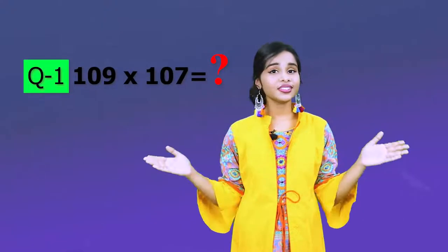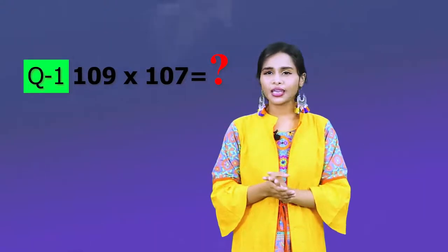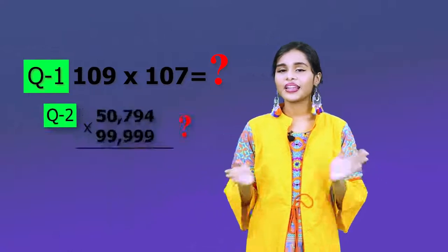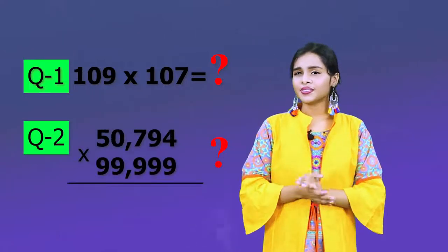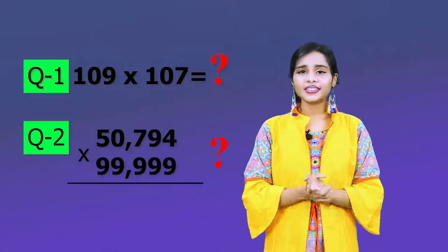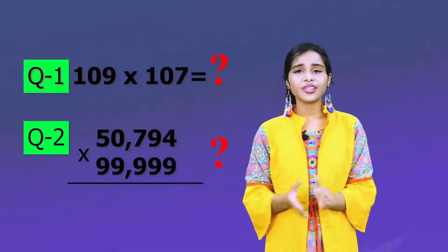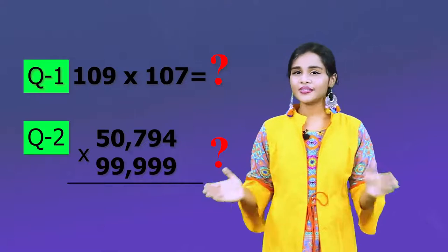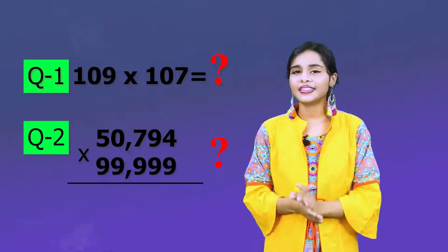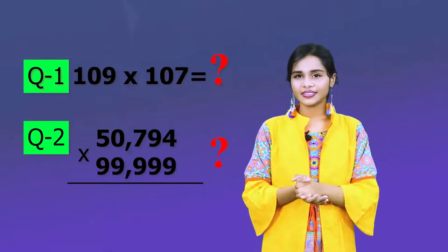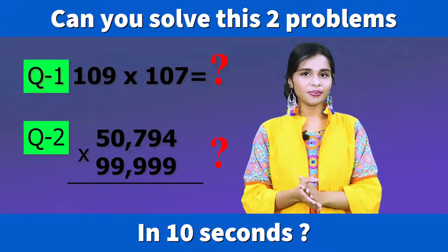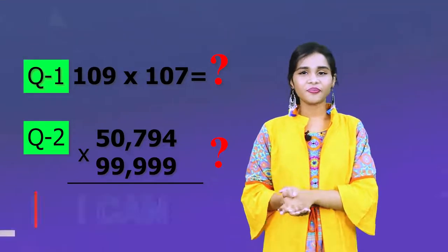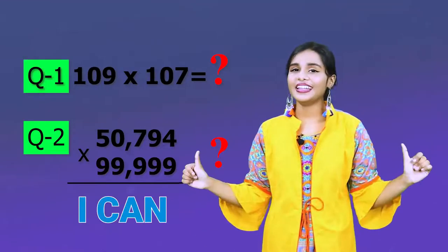109 times 107 equals what? 50,794 into 99,999. Can you solve these two problems in 10 seconds? I can.